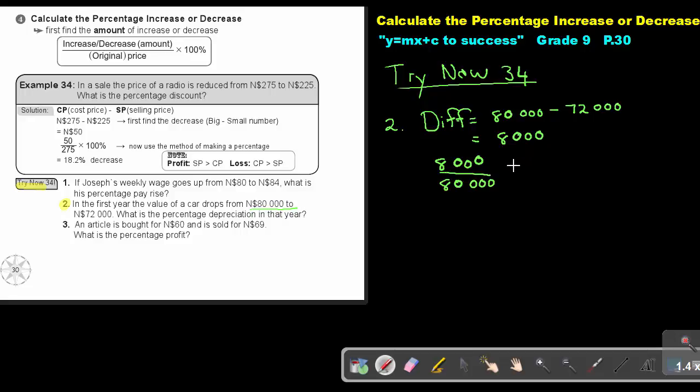And then to make it a percentage, we multiply by 100%. And that will give me an answer of 10%. What is the percentage depreciation in that year? So we can enter the sentence, the percentage depreciation is 10%. Okay. And this is how you do this kind of sums.